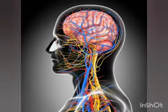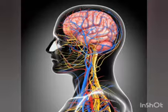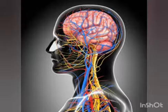A network of nerves runs throughout our body. These nerves carry messages to and from the brain, spinal cord, and other parts of the body. There are mainly three types of nerves: sensory nerves, motor nerves, and mixed nerves.